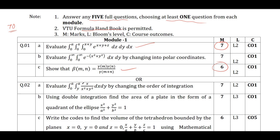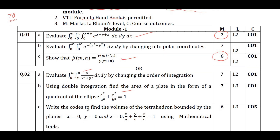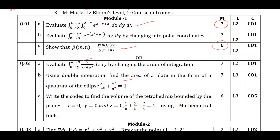In the alternate choice question, they have given changing the order of integration to evaluate a double integral. Another question asks you to use double integration to find the area of a plate in the form of a quadrant of an ellipse. They also ask you to write a mathematical code using a mathematical tool to find the volume of a tetrahedron. This is what Module 1 contains.